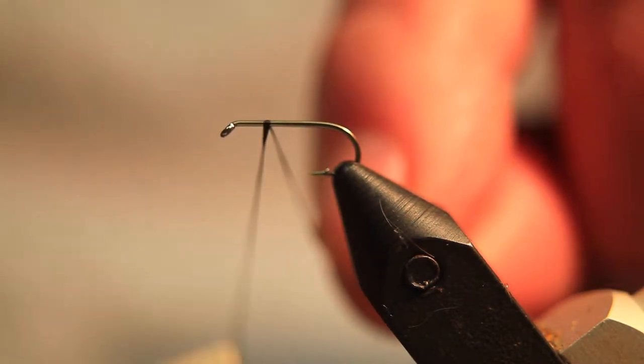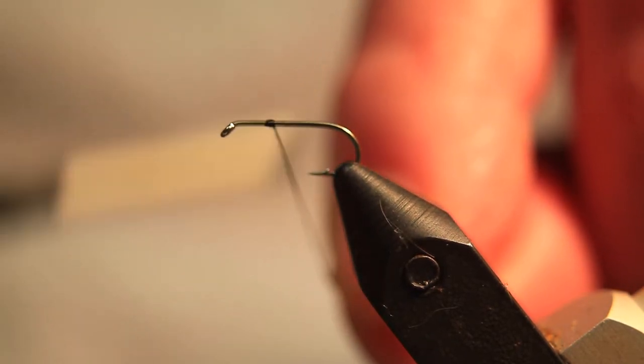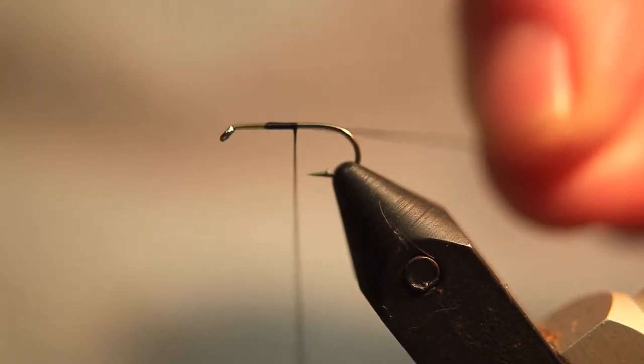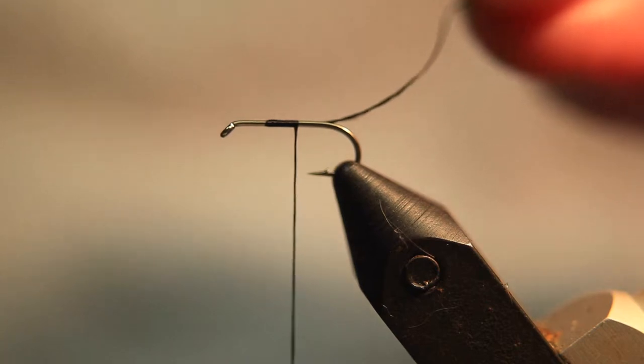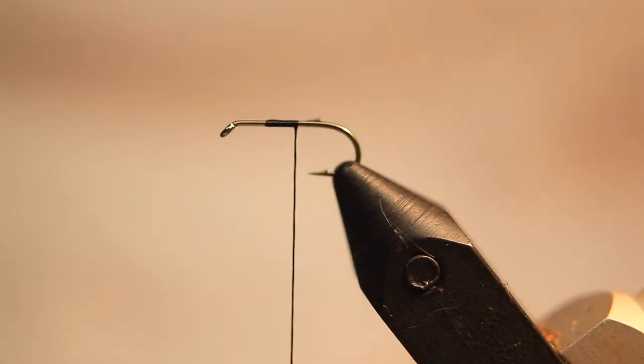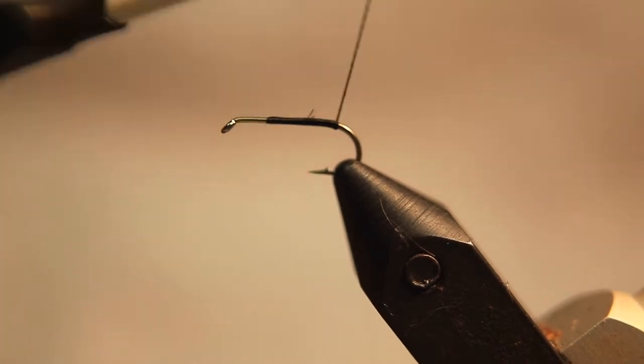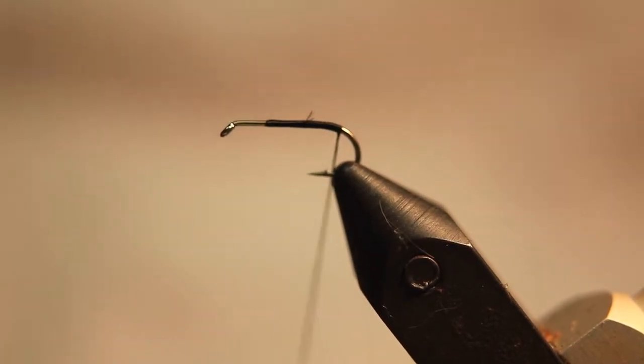First we'll start off by attaching the thread at the two-third mark, and we'll wind our way down to the bend of the hook. Cut the excess off, and we'll stop when we are in line with the barb.